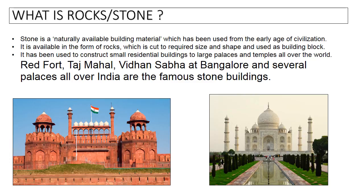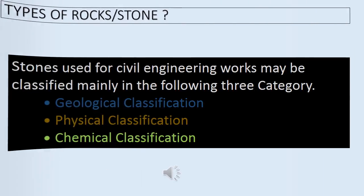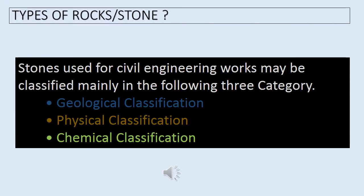It has been used to construct small residential buildings to large palaces and temples all over the world. Red Fort, Taj Mahal, and several palaces all over India are famous stone buildings. Stones used for civil engineering works may be classified mainly into three categories: first is geological classification, second is physical classification, and third is chemical classification.